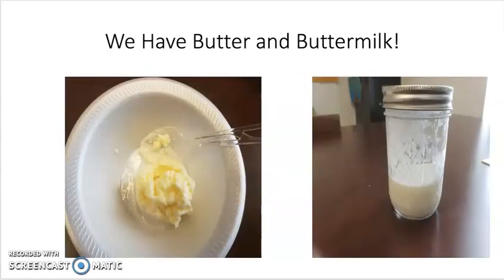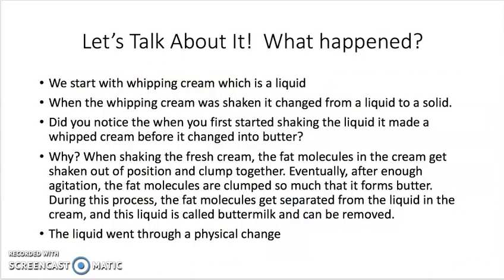Now that you've finished shaking, we should have butter and buttermilk. If you take a look at the picture, there's butter in the bowl and also in the jar. The liquid that is left is buttermilk. Let's talk about it — what happened? We start with whipping cream, which is a liquid. When the whipping cream was shaken, it changed from a liquid to a solid.